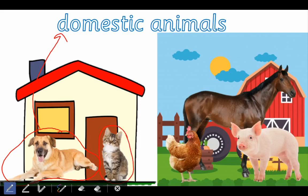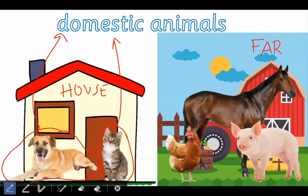Look at this cat — it lives in a house, so is it wild or domestic? Very good, it's a domestic animal. It lives in a house. Fantastic. And let's look at some animals who live on a farm. Look at this hen here — it lives on a farm, so is it domestic or wild? Domestic! Fantastic.